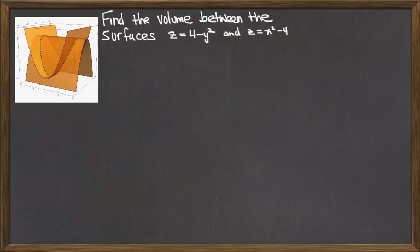In this video we'll look at the next example of finding the volume between two surfaces. These surfaces are given by z = 4 - y² and z = x² - 4.